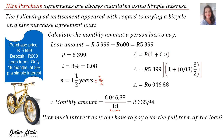How much interest does one have to pay over the full term of the loan? The interest is the final amount — R6,046 — minus the initial amount of R5,399. Therefore the interest paid was R647.88.